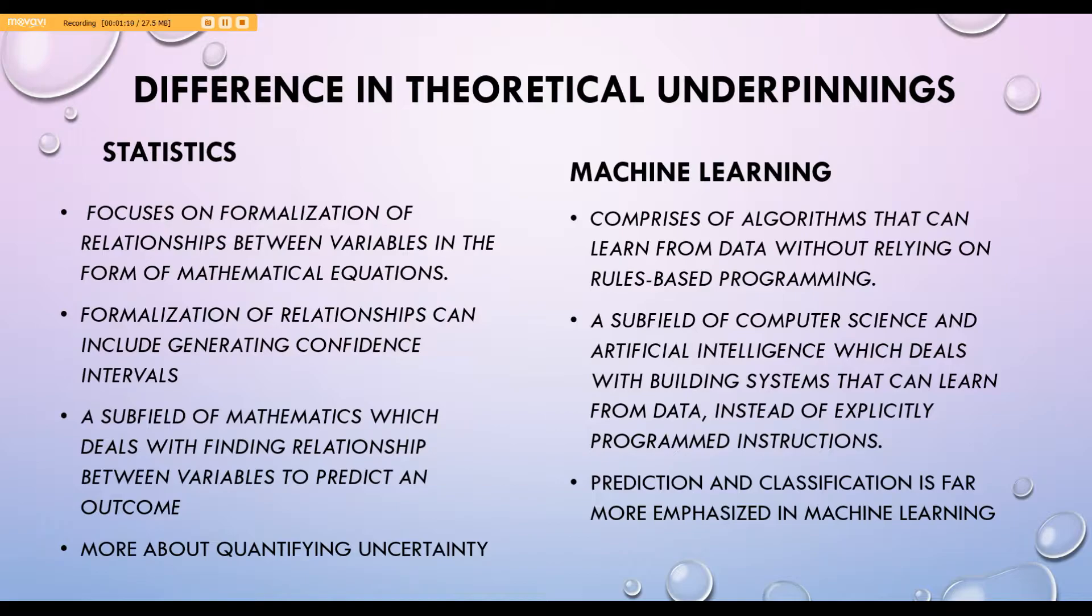Statistics focuses on formalizing the relationship between variables in the form of mathematical equations. Machine learning, on the other hand, comprises algorithms that can learn from data without relying on rules-based programming or any formalization. In statistics, formalization of relationships can include things like generating confidence intervals, and obviously these are not the things that you'll get in machine learning, as you will see in the subsequent sections.